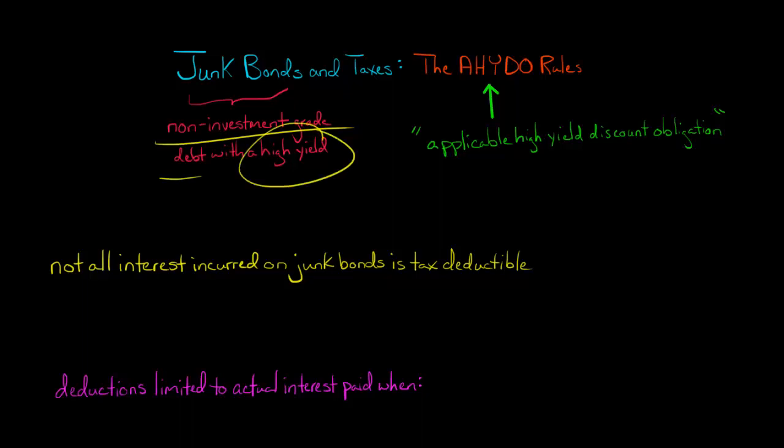The tax code refers to a junk bond as Applicable High Yield Discount Obligation, or AHYDO. Not all the interest incurred on a junk bond is going to be tax deductible.